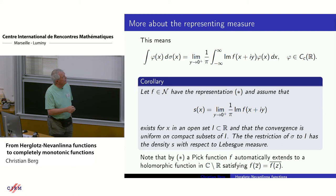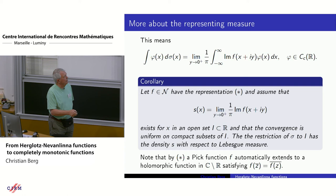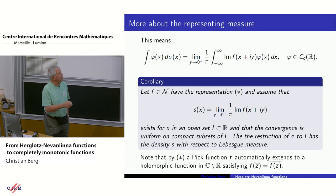There is a small addition: if the imaginary part has a nice limit as you tend to the real line and you get a limit function s(x), existing uniformly on compact sets in some open set I, then the restriction of the measure sigma to this open set I has a density with respect to Lebesgue measure given in this way. This is very useful when you want to calculate the measure if it has a density.